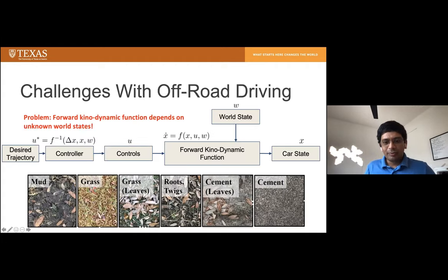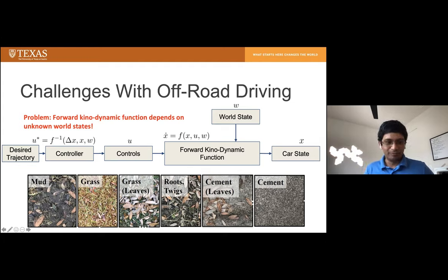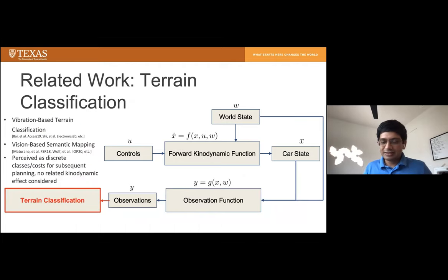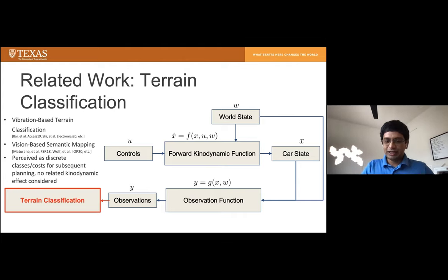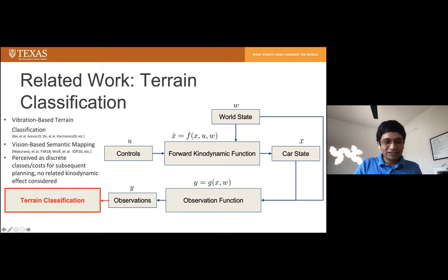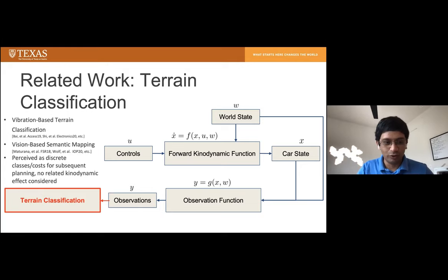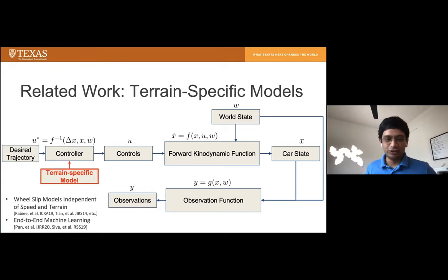The problem is that the forward kinodynamic function depends on unknown world states — for example, driving over mud, grass, or grass with leaves — which really modify how the car behaves in the real world. One conventional approach is to use onboard sensors with an observation function, perform terrain classification to understand the terrain type, and then use a terrain-specific model in your controller.